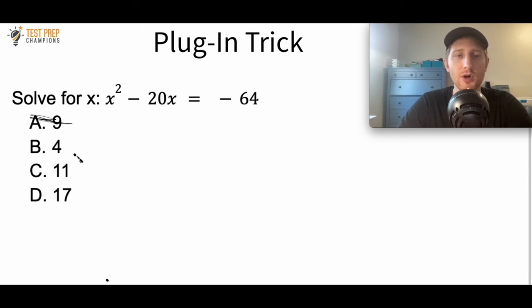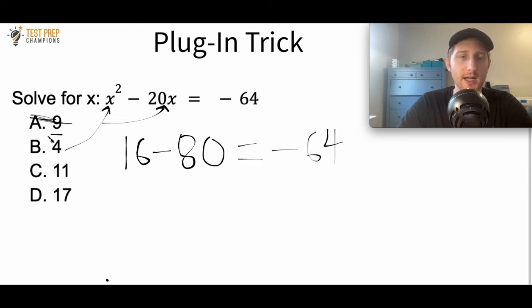So now let's try B. Let me plug 4 in for x. What is 4 squared? 4 squared is 16. What is 20 times 4? 20 times 4 is 80. So I'll have 16 minus 80, and that is negative 64. So we now see that B is the correct answer.